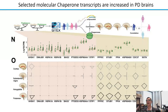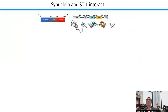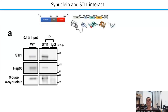We also looked at how chaperones correlate with synuclein. Chaperones that change expression show some correlation with synuclein, but not as strong as those that don't change expression in Parkinson's disease. We were particularly interested in one of those four chaperones called Stress-Inducible Phosphoprotein 1 (STIP1 or STI1). It's a critical protein that regulates transfer of proteins between HSP70 and HSP90 — important for the function of this molecular chaperone system.